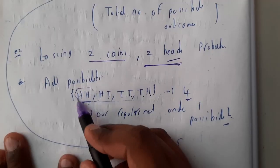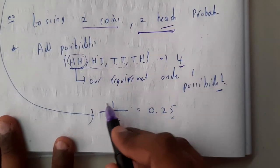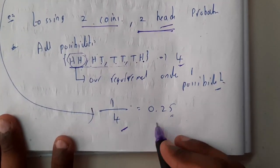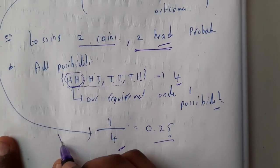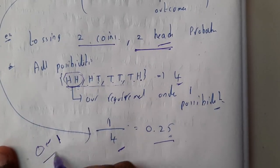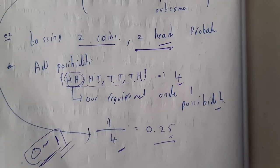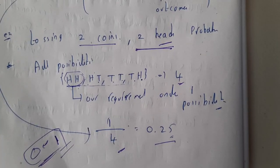So our requirement is this - there is only one possibility. So one possibility out of four, one by four, that is nothing but 0.25. So we can say this is the probability. Remember guys, probability will always range from zero to one only if you are doing the problem correctly.